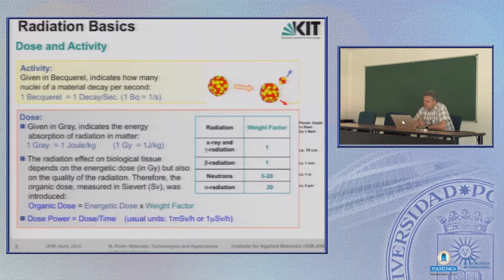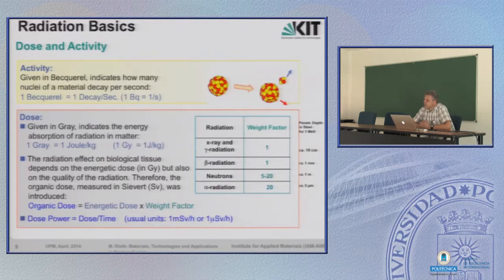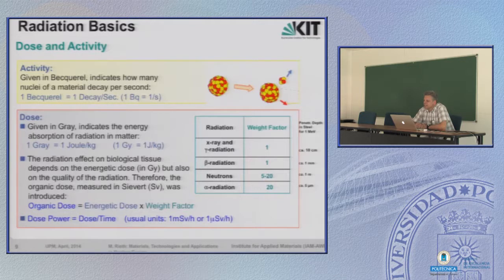The activity is given in Becquerel and indicates how many nuclei of a material decay per second — simply decays per time. Since this is not so informative, as it only numbers the decay rate, there is also the measurement of dose, given in Gray, which indicates the energy absorption of a radiation type in matter. One Gray equals one joule per kilogram. However, this dose only measures energy per mass and doesn't say anything about the actual damage it causes.